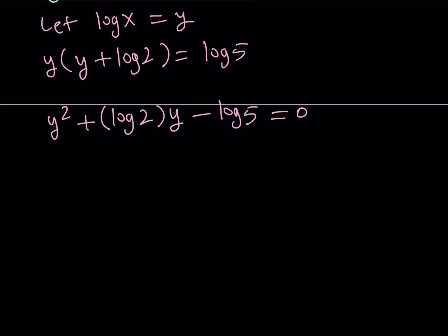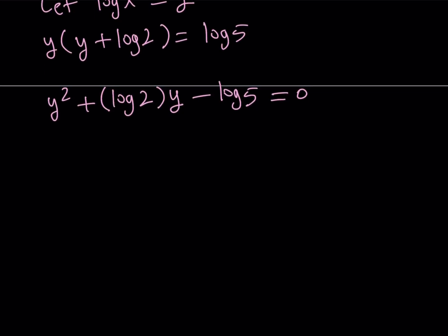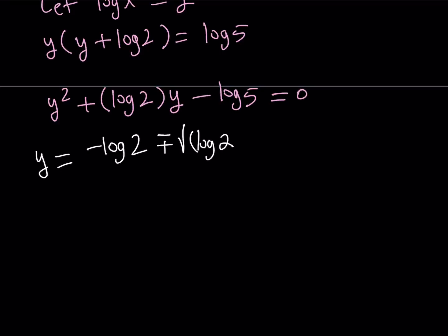I mean, at this point, if you want, you can turn log 5 into log 2, but we'll do that later. So from here, by using the quadratic formula, we can write y equals negative b plus minus the square root of b squared minus 4ac all over 2a.